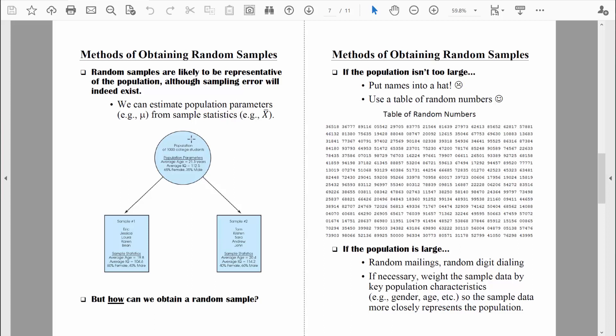So I think we might have seen this example before, but if you look at an entire population of 1,000 college students, whatever characteristics describe that population are known as population parameters.